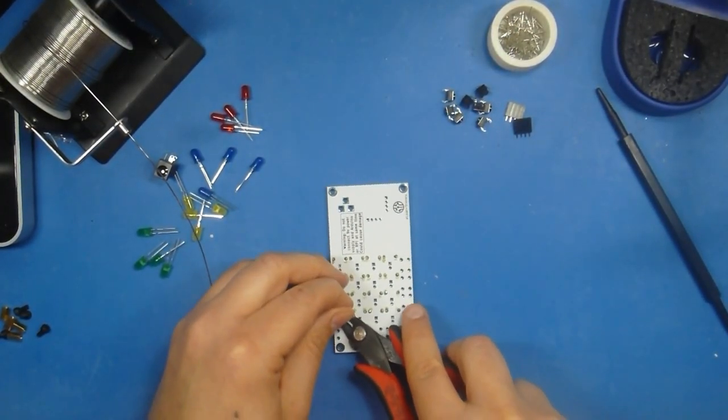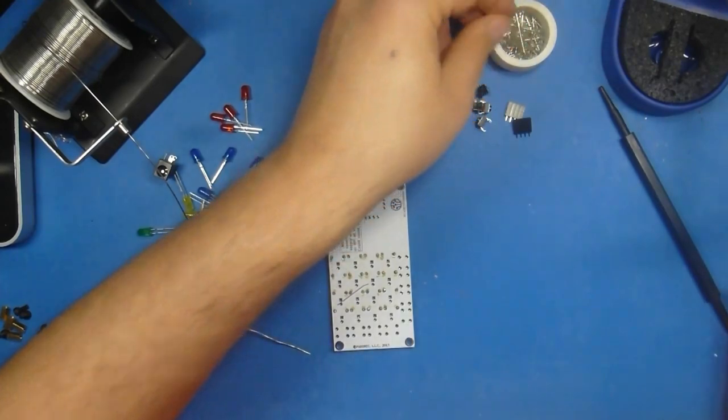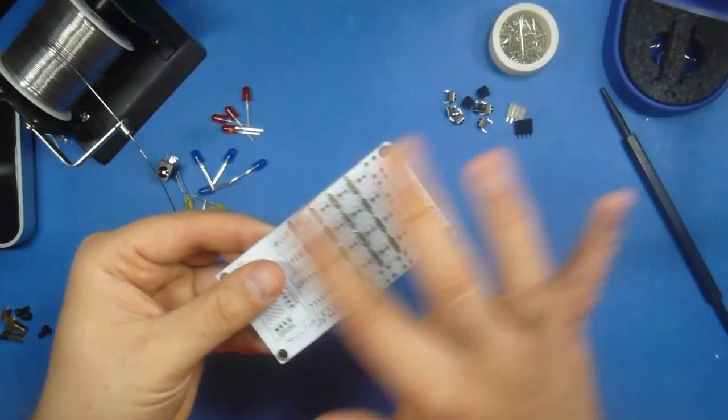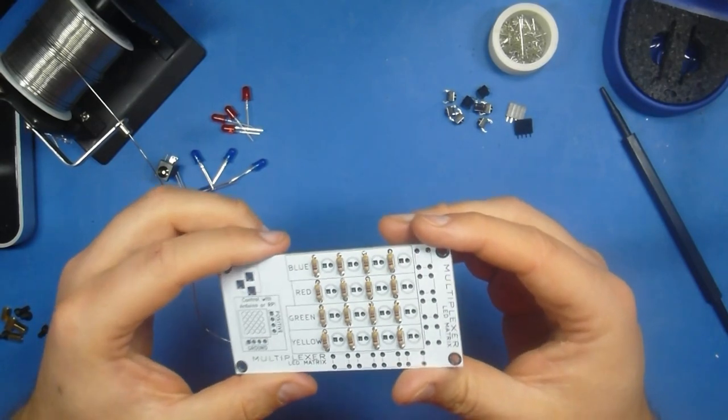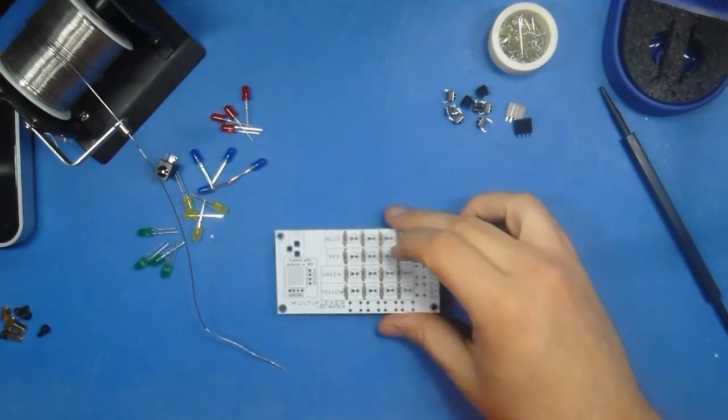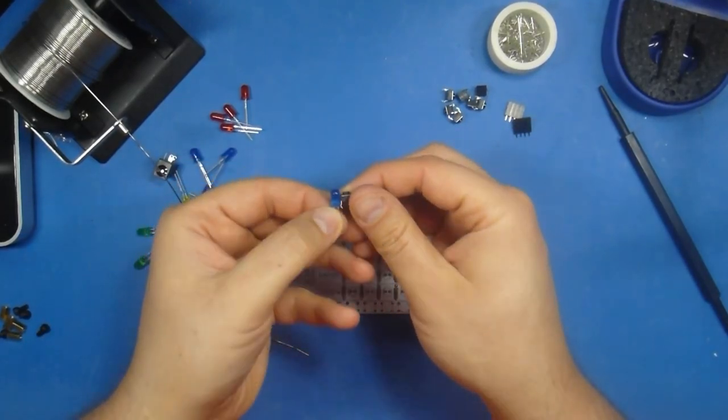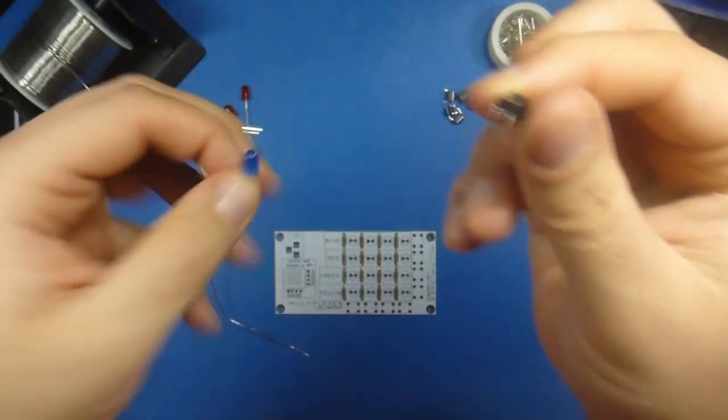Okay, just clipping the last leads. Clean up the board, and there we go. Beautiful resistors, nice and flush and clean with the board. Now if you're not ready, go ahead and pause the video.